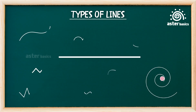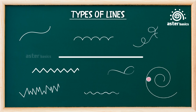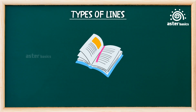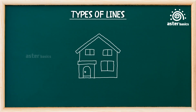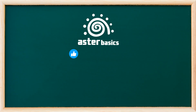Wow! That was a whole world of lines. Lines aren't just straight — they can zigzag, swirl, bounce, and even show your spelling mistakes. Now that you know their names and how they work, you can spot them everywhere — in your books, drawings, and even on signs. Don't forget to give this video a big thumbs up if you had fun. Share it with your family and friends and hit that subscribe button so we can keep learning and exploring together. See you next time with more fun facts and learning adventures!